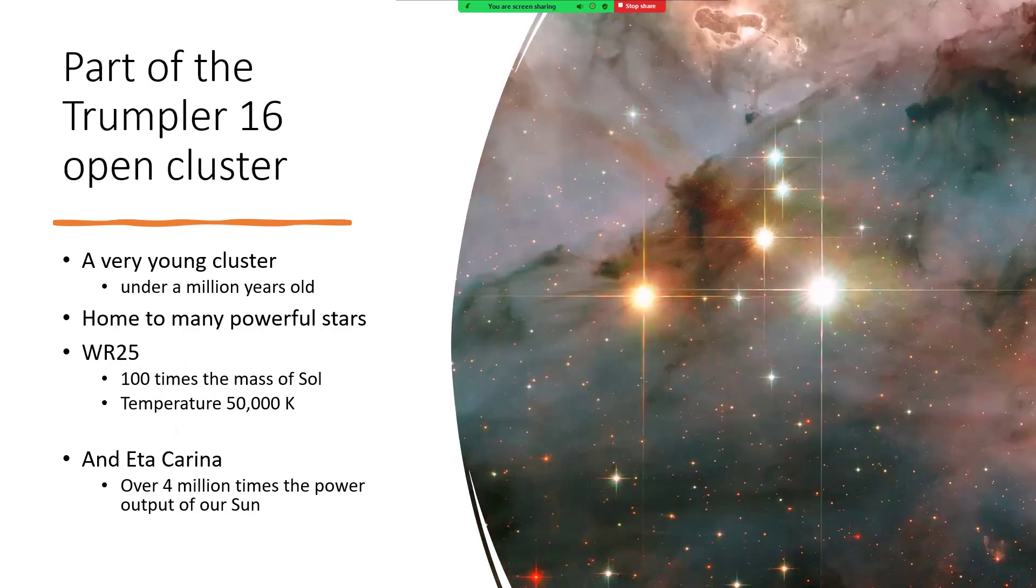One of those clusters is Trumpler 16, a very young cluster under a million years old. This entire area is full of newly made stars built out of all this gas and dust that has been getting together and collapsing under its gravity.